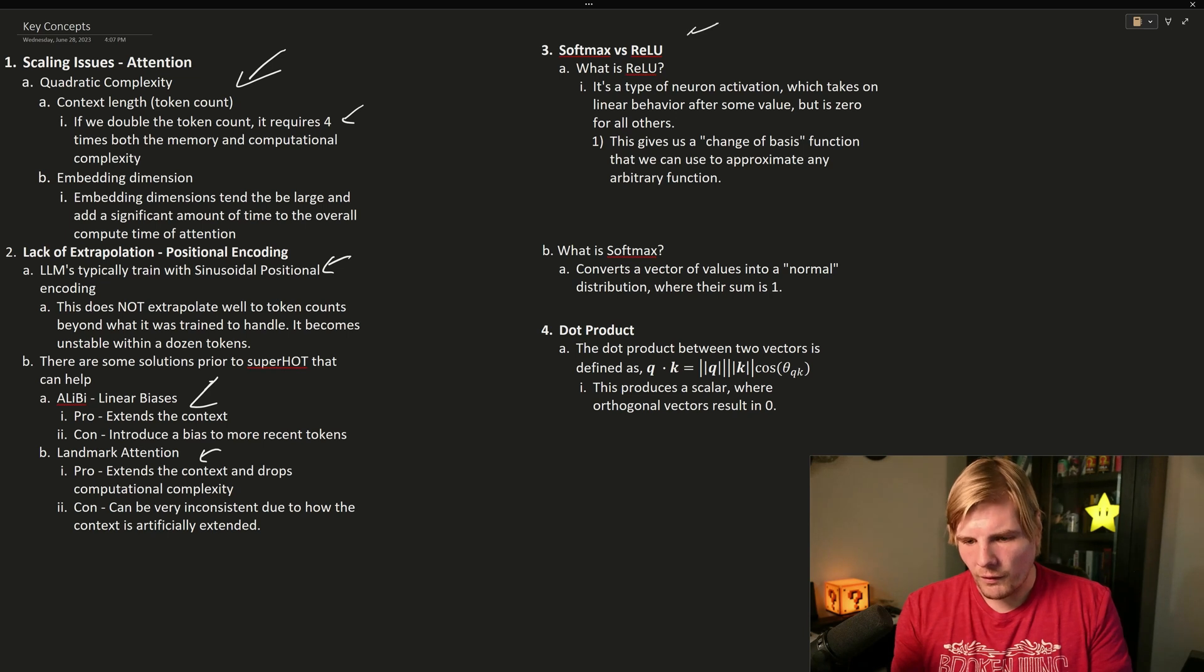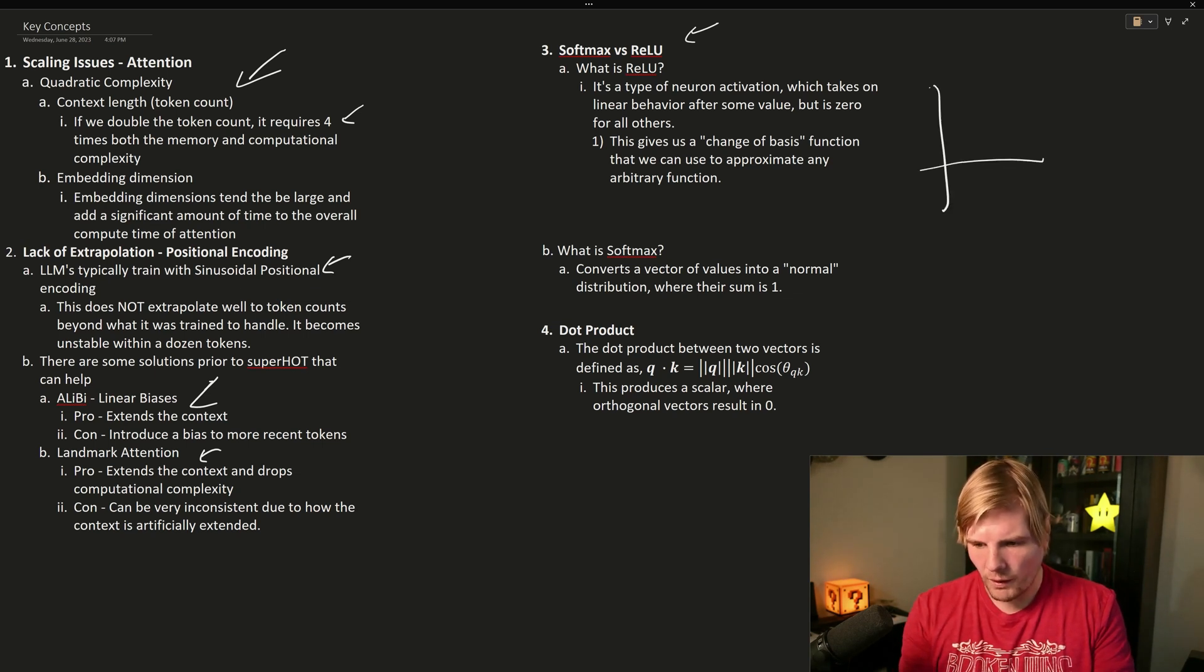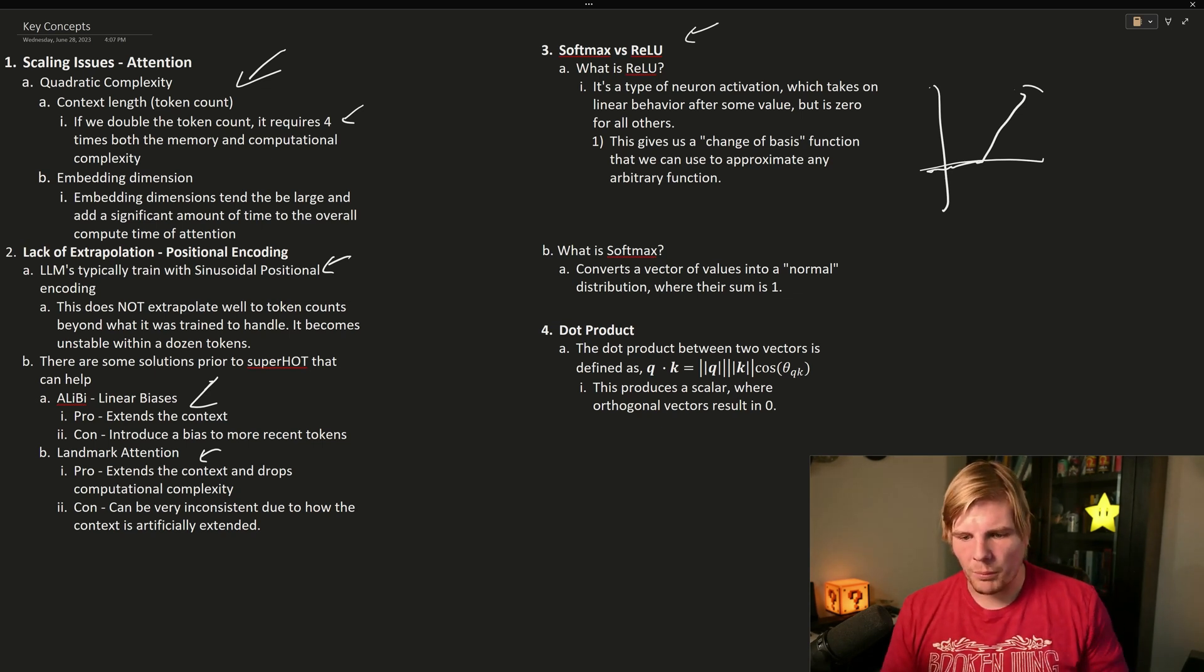We also need to understand the difference between softmax and relu, where relu is a type of neuron activation. Up until a certain value, it's zero, and then linear beyond that. So it would look like this, where if we have our x and y, up until some point it's zero, and then it goes off linearly. This is what we call a change of basis function, where we can approximate any arbitrary function with some combination of these relu's.